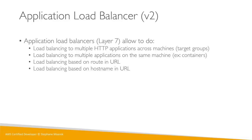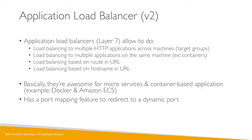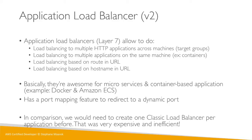You can load balance based on the route in the URL or based on the hostname in the URL, allowing for greater flexibility. ALBs are a great fit for microservices and container-based applications such as Docker and Amazon ECS, as well as for EC2. There is also a port mapping feature where the load balancer can redirect to any dynamic port in the backend, allowing it to redirect to the same instance running multiple applications. Previously, five microservices required five Classic Load Balancers, which was expensive; now one ALB can front ten applications.